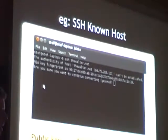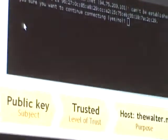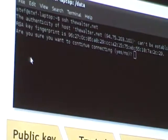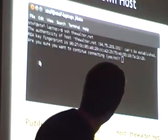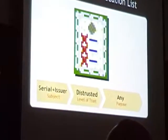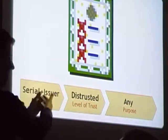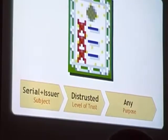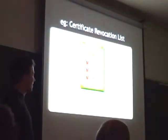SSH: when you first connect to a host, you have the subject of the trust assertion as the public key, trusted level, and the host as the purpose. When you type yes, it adds a trust assertion to your known hosts file. These are all stored in different ways in different places, but they're essentially the same concept. Here's a negative trust assertion: a CRL consists of a bunch of trust assertions. We are stating that this subject, represented by a serial number and issuer, is distrusted — for any purpose. With distrust, carte blanche purpose makes much more sense.